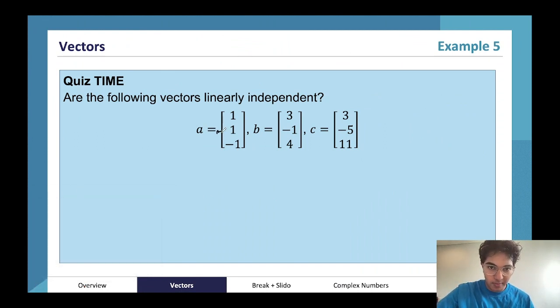Alright, so again, I'm just going to write the m and n in front. So what we'll have here is m plus 3n is equal to 3, m minus n is equal to negative 5, minus m plus 4n is equal to 11. So I'm going to use the last two equations because I can just add them together and cancel out the m's. So I'm going to add these two together. I'll get 3n is equal to 6, and so that tells me n is equal to 2.